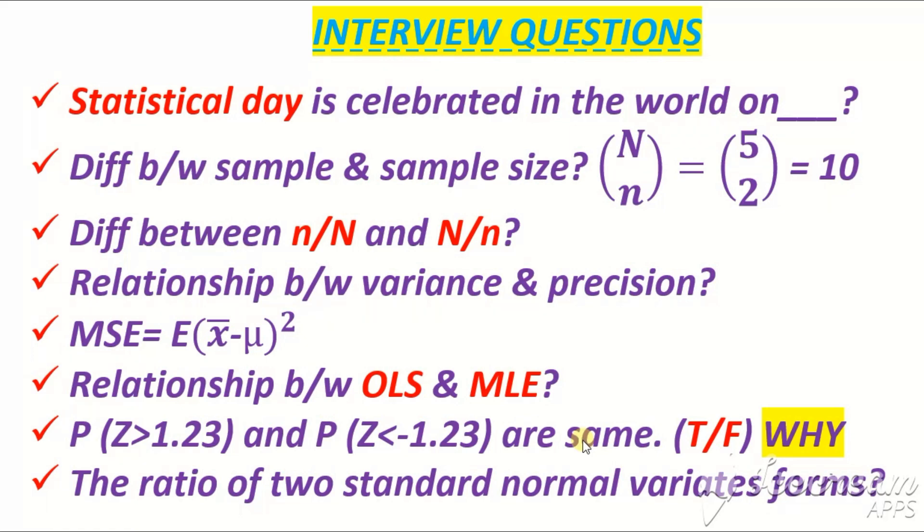Remember that standard normal distribution is a symmetrical distribution. So the area greater than 1.23 and the area less than minus 1.23 - if you draw on a curve, both of these probabilities will be equal. This is because Z is a symmetrical distribution. The right and left side areas are equal. Since these probabilities are designed symmetrically, greater than 1.23 must equal less than minus 1.23. It is always true due to the symmetrical distribution.